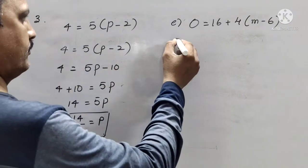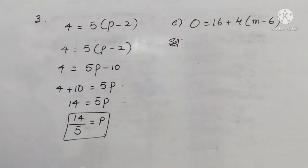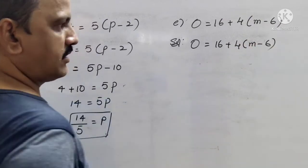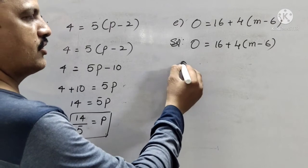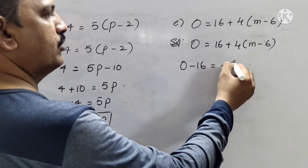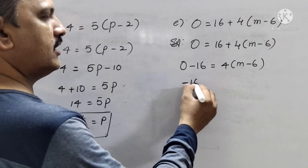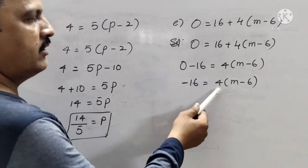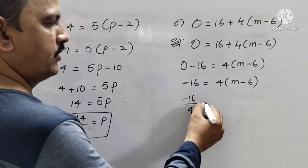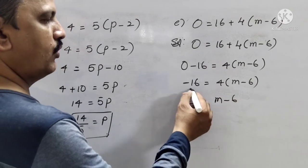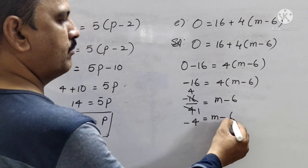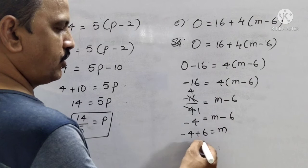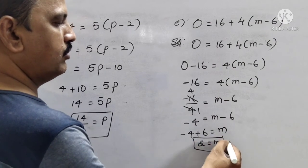Coming to the solution of e: 0 equals to 16 plus 4 into m minus 6. We can send 16 directly, so 0 minus 16 equals to 4 into m minus 6. That is minus 16 equals to 4 into m minus 6. Since 16 is divisible by 4, send 4 as a divisor: minus 4 equals to m minus 6. Keep m on the right side and send minus 6 to the left — minus 4 plus 6 equals to m. So, 6 minus 4 is 2, that is m equals to 2.